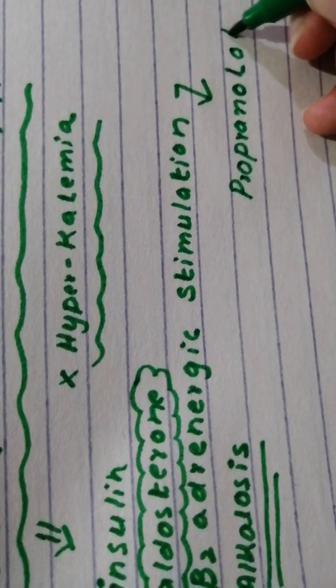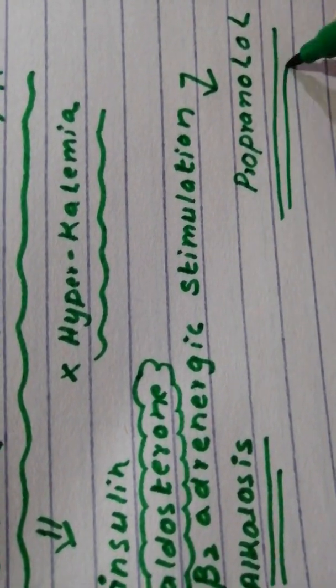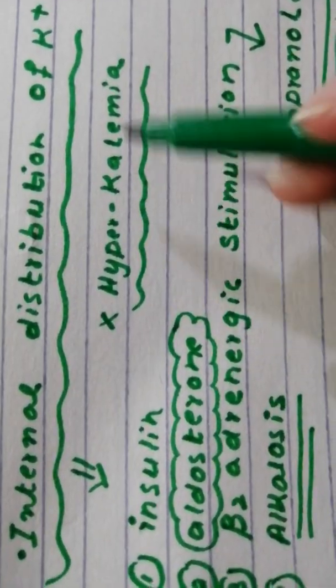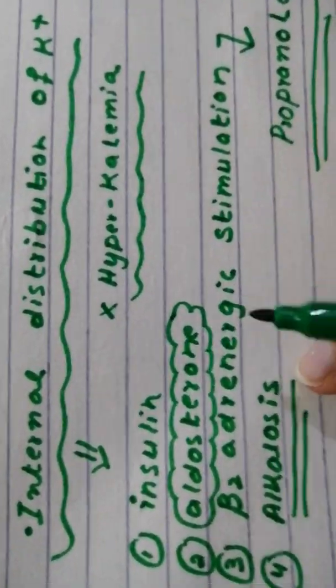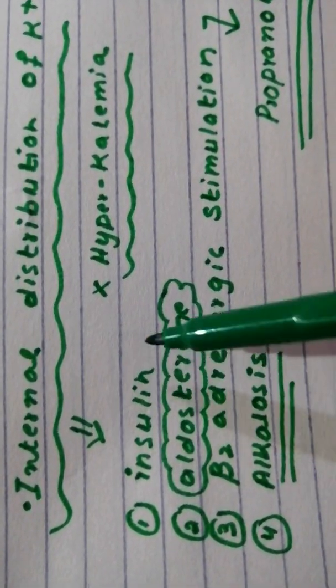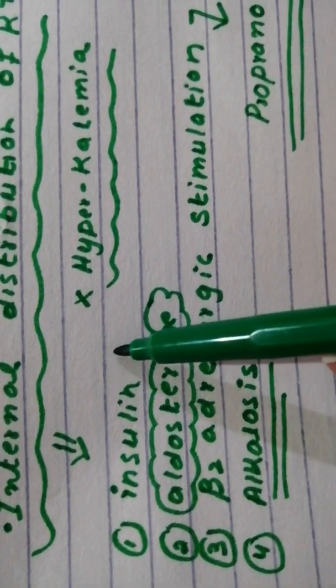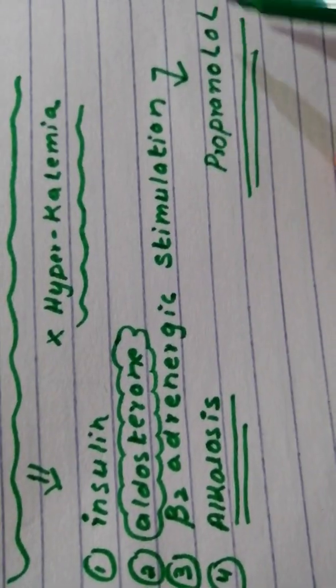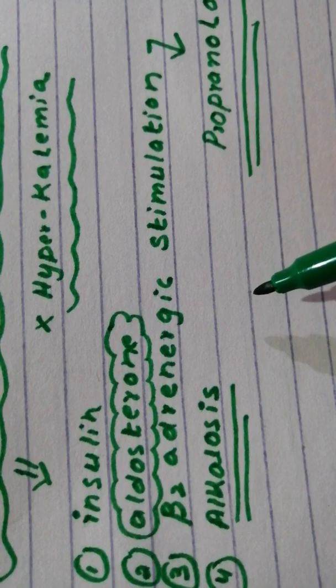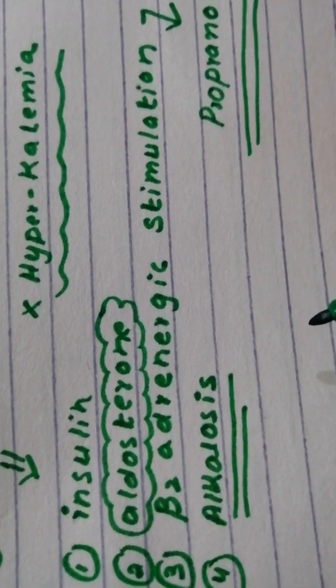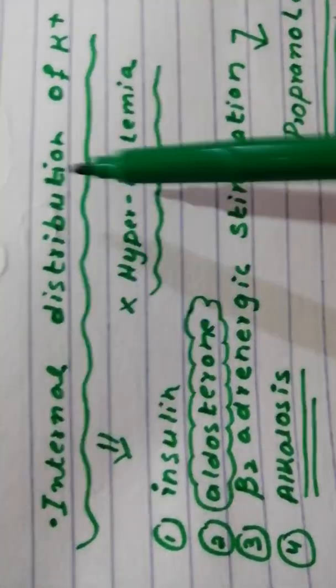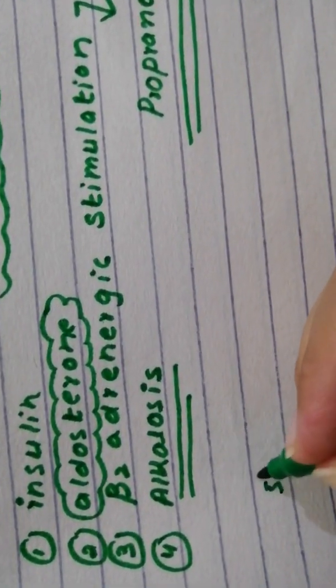Some opposite scenarios where internal distribution is a problem: when you are diabetic, have Addison's, use beta blockers, or have acidosis - because acidosis inhibits the sodium-potassium channel. In that case, you can also have hyperkalemia because of derangement of internal distribution.